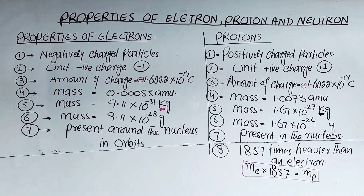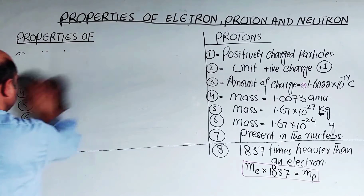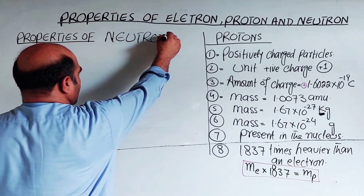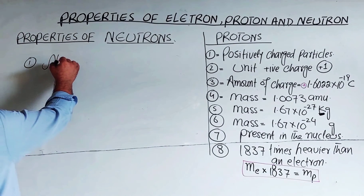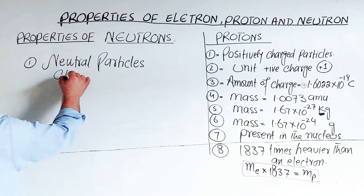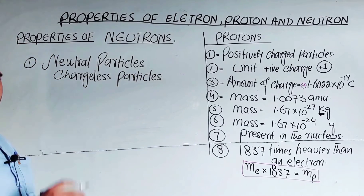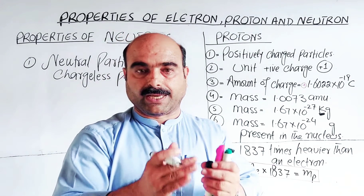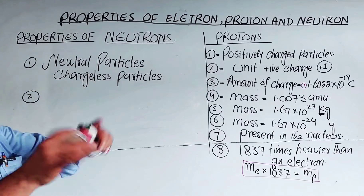Now the third sub-atomic particle is the neutron. What are the properties of the neutron? The first property: neutrons are neutral particles. These are chargeless particles. They have no charge — neither positive nor negative. They do not carry positive or negative charge; that is why they are called neutral particles. Since there is no charge, there is no amount of charge to discuss.